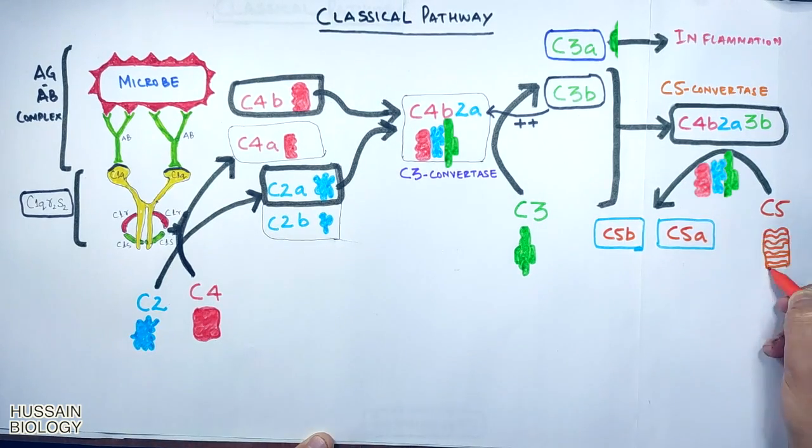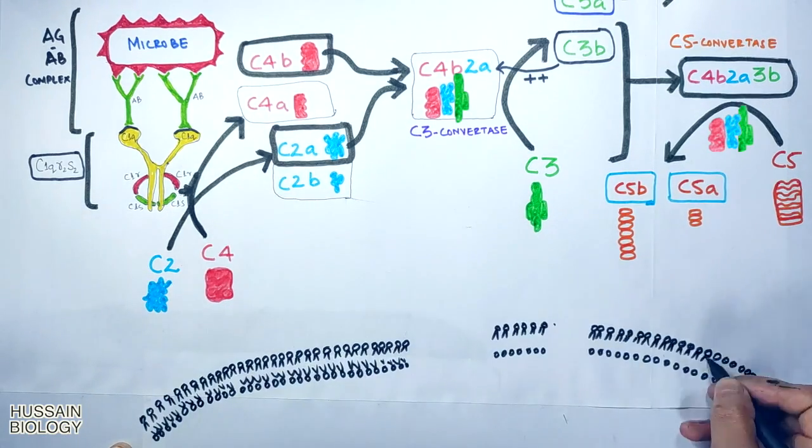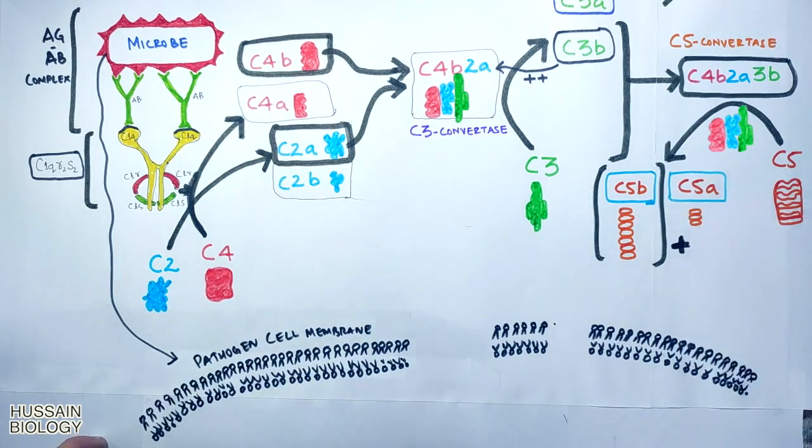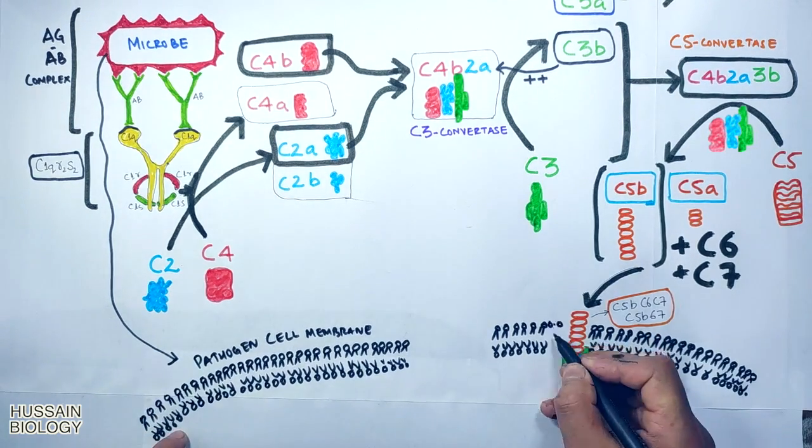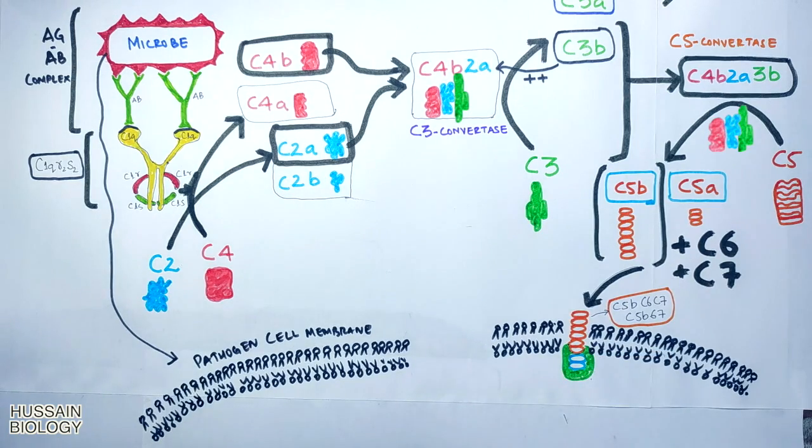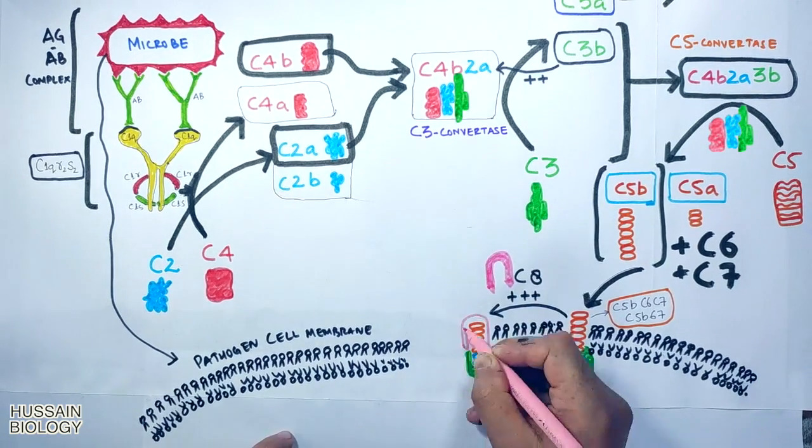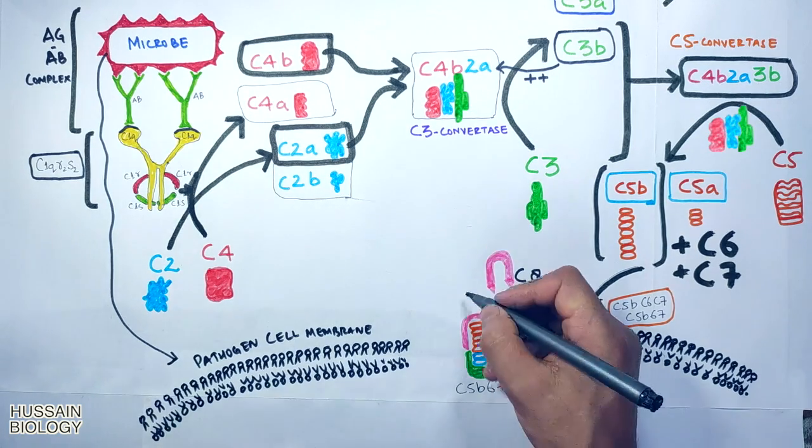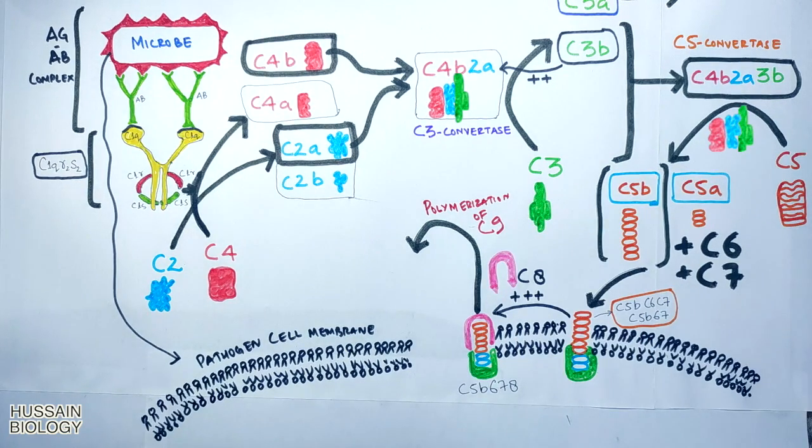Now let's move towards the target membrane which is the pathogen membrane. We see the C5b molecule recruits C6 and C7 proteins and gets into the membrane as shown in the diagram, giving us C5b67. This complex recruits another complement protein called C8 and we get the complex C5b678. This complex has capability to polymerize C9 molecules into the pathogen membrane.